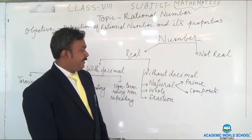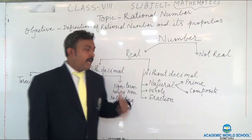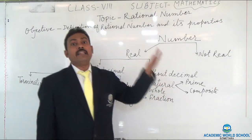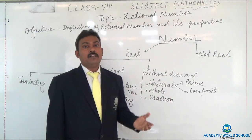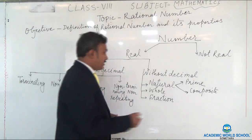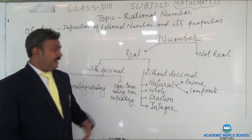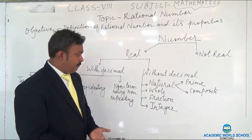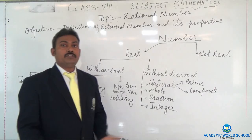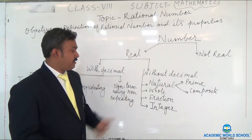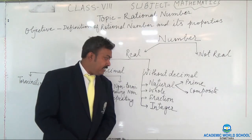Then comes the whole number. Before zero was discovered, we had only one set of numbers called natural numbers. But when zero was discovered, we made a new set called whole numbers, which starts from zero and goes to infinity. Then comes the fraction and the integer. After zero, we discovered negative and positive numbers, and those are all kept in the integers. So integers are a group of numbers which includes zero, negative numbers, and positive numbers. Fraction is a number written in the form of p by q, where p and q are whole numbers and q is not equal to zero.